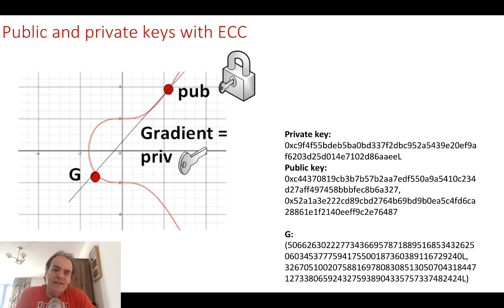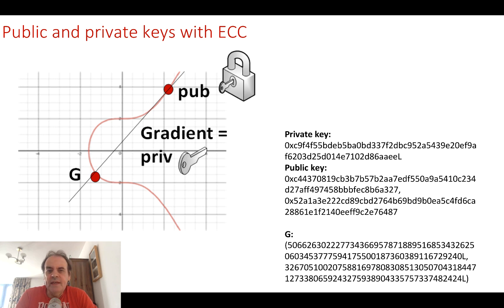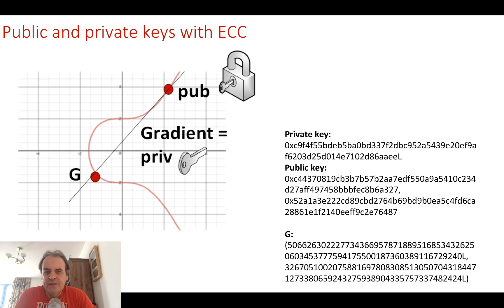Just a little bit about elliptic curve encryption. Initially we have a specification for a curve, and then we define a point on the curve G. After that we create typically a 256-bit private key — a random number — and that number defines the gradient of the slope from G up to a public key value. The public key is an XY point, which we distribute to anybody who wants to encrypt something for us, while keeping the private key secret.